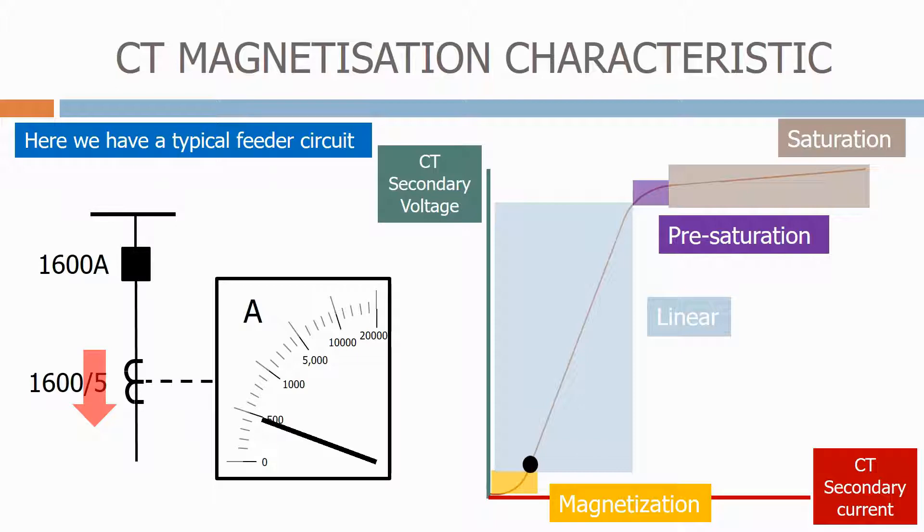Let's now increase the primary current. As we can see, as the current increases, so does the voltage. Because the primary current is well below the 1600 amp capacity of the CT, the current transformer operates at the bottom end of the linear phase.